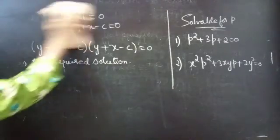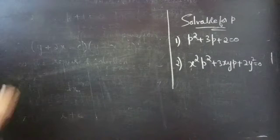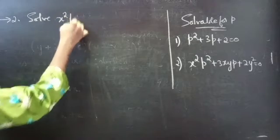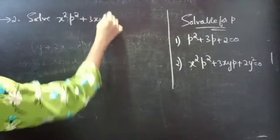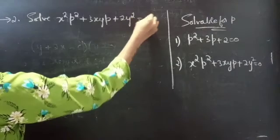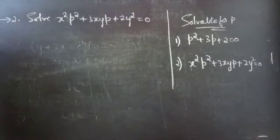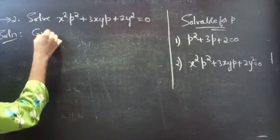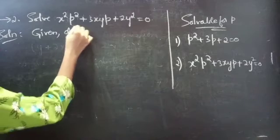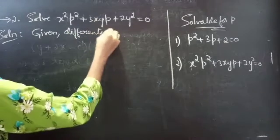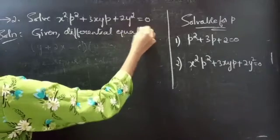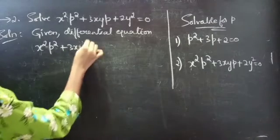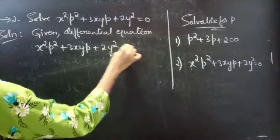Now coming to the second problem: Solve x squared times p squared plus 3xy times p plus 2y squared equals to 0. We are given the differential equation x squared p squared plus 3xyp plus 2y squared equals to 0.